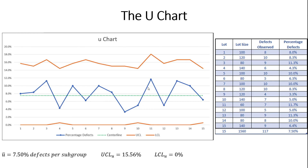Similar to the P chart, you can actually calculate unique control limits for every sample size. For example, subgroup 11 only inspected 60 pieces, so we could calculate specific control limits using 60 instead of N bar. We used N bar of 104 to calculate our generic control limits, but if you wanted to, you could use the actual subgroup size and see the control limits change as your sample size fluctuates.